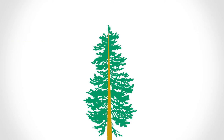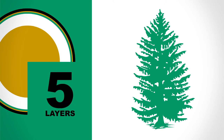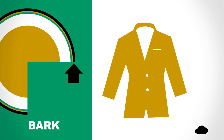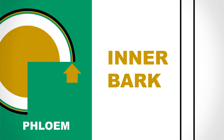A typical tree has five layers in its trunk. First, the bark. The bark is like a protective jacket for the tree. Under the bark is the phloem, also known as the inner bark. It transports sap and sugars from the needles and leaves to nourish the rest of the tree.